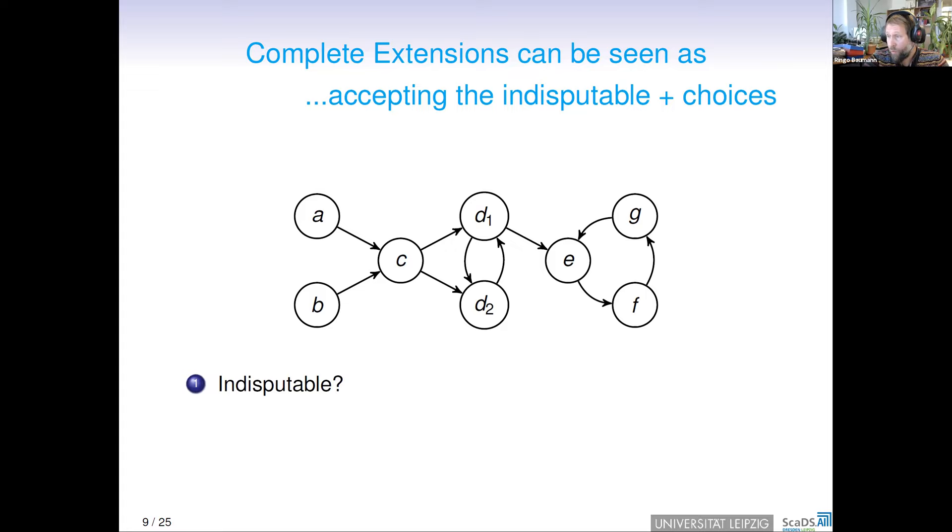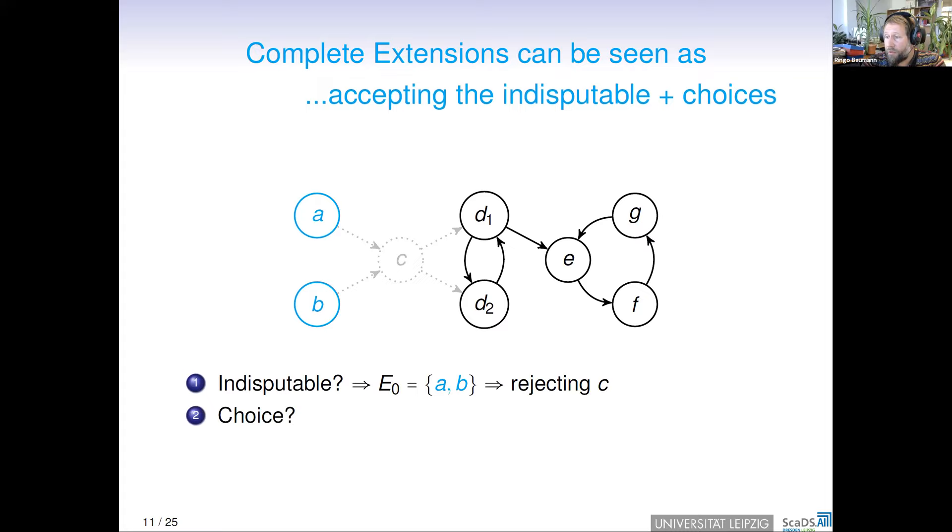So what is indisputable here? Well, even in a very skeptical view, we should have no problems with accepting A, B, because they are not attacked. They are unattacked arguments, so we accept A, B. Accepting A, B entails rejecting C, because C is attacked by A as well as B.